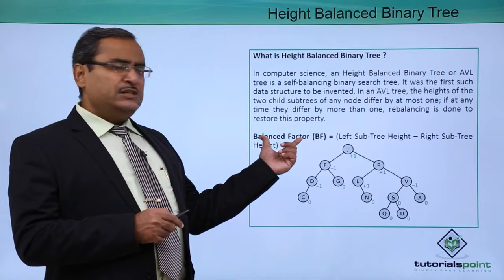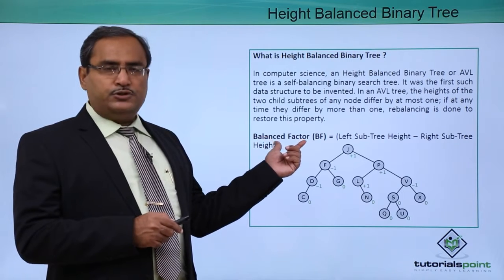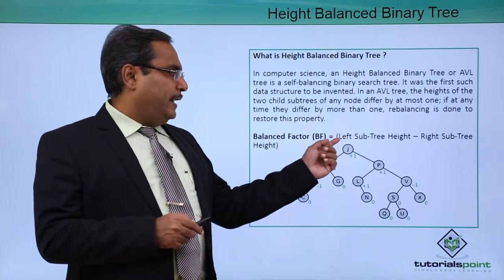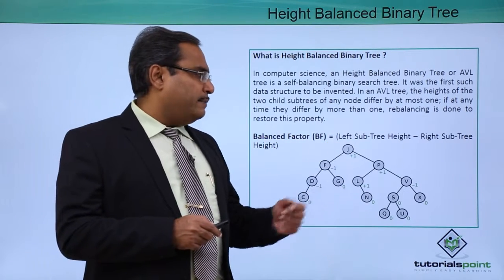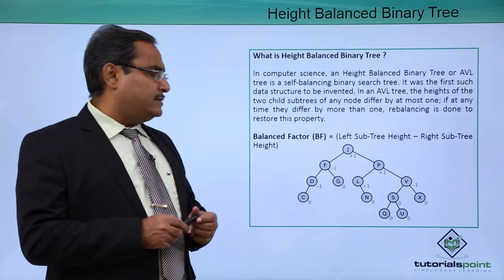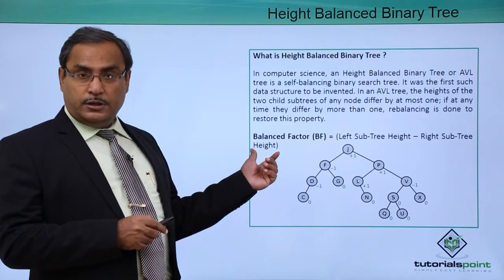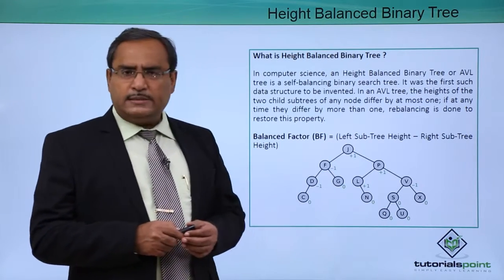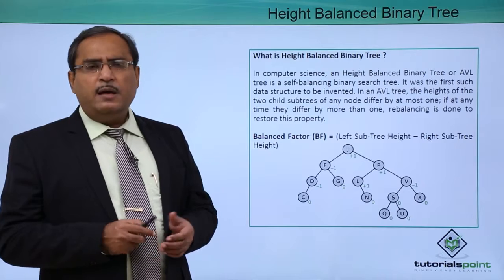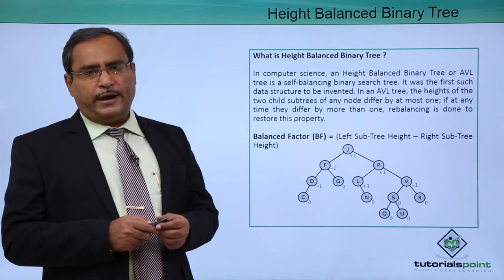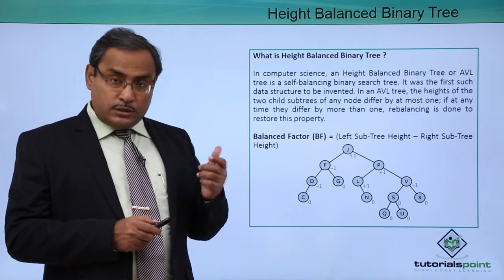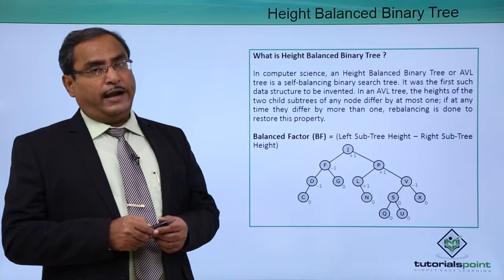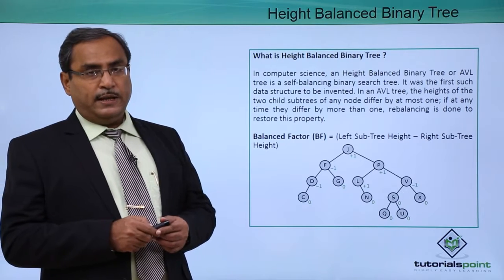The balance factor, also called BF in short, is the left subtree height minus the right subtree height. You can also consider right subtree height minus left subtree height, but it is common practice to consider left subtree height minus right subtree height.